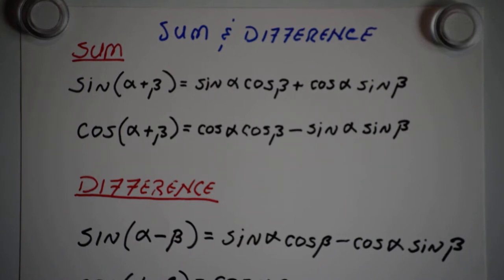The sum formula for the cosine, the cosine of alpha plus beta, is equal to the cosine of alpha times the cosine of beta minus the sine of alpha times the sine of beta.